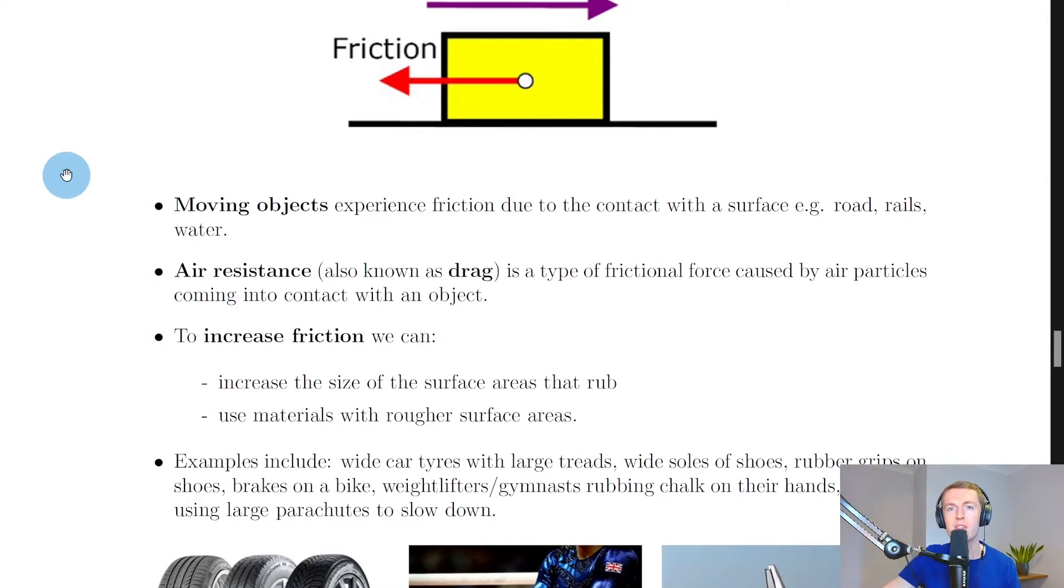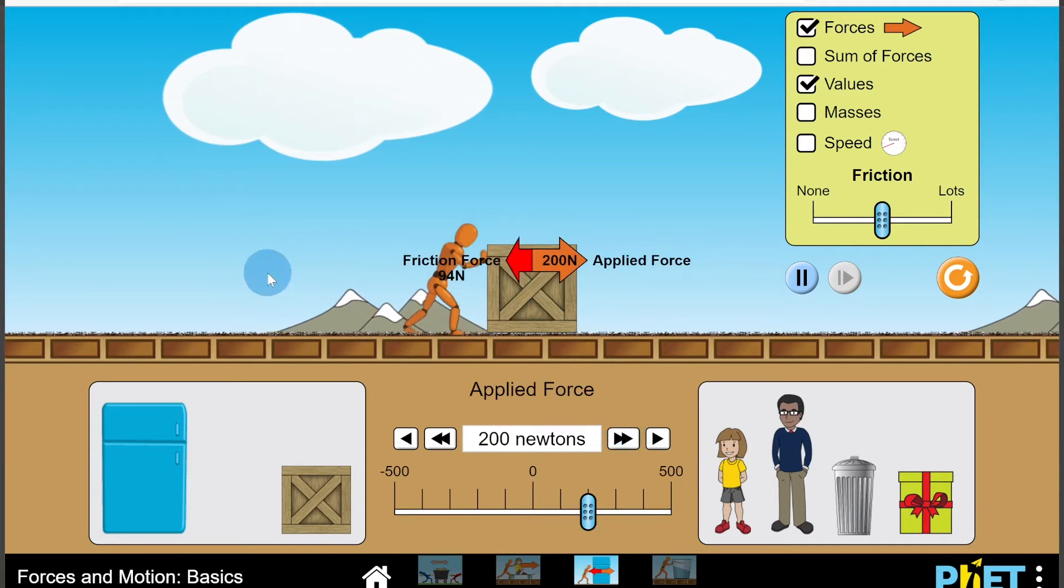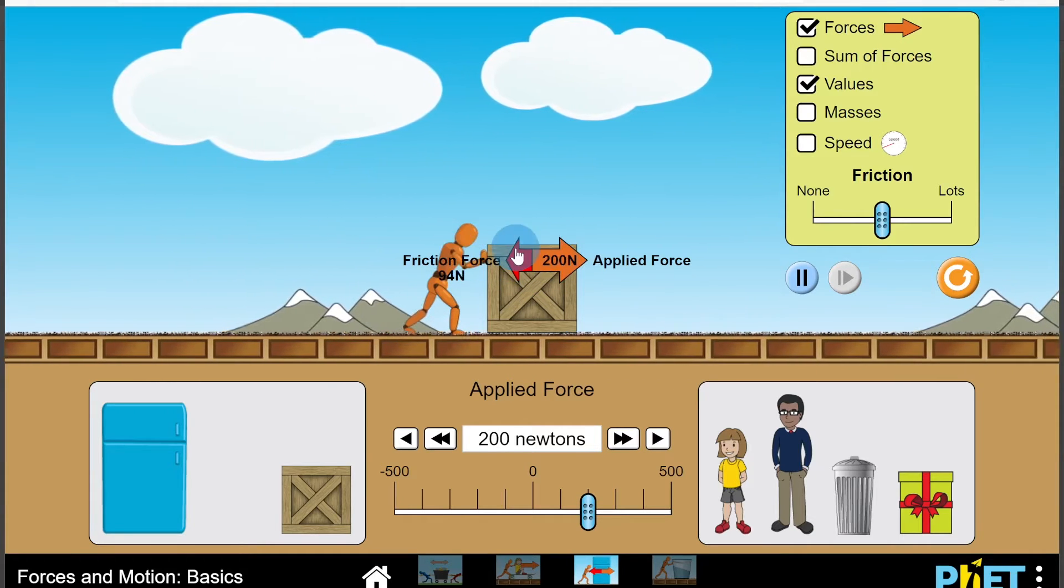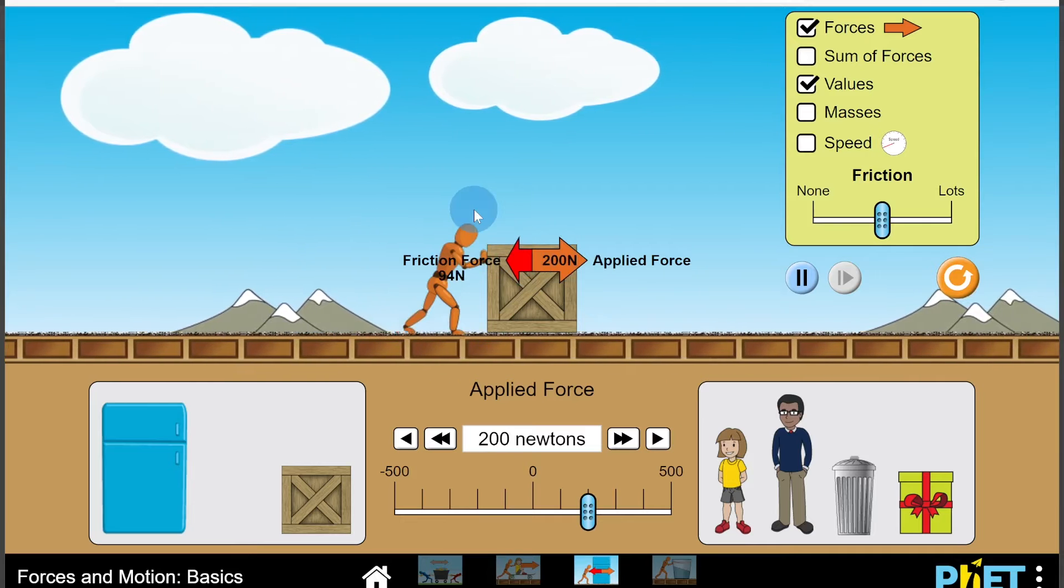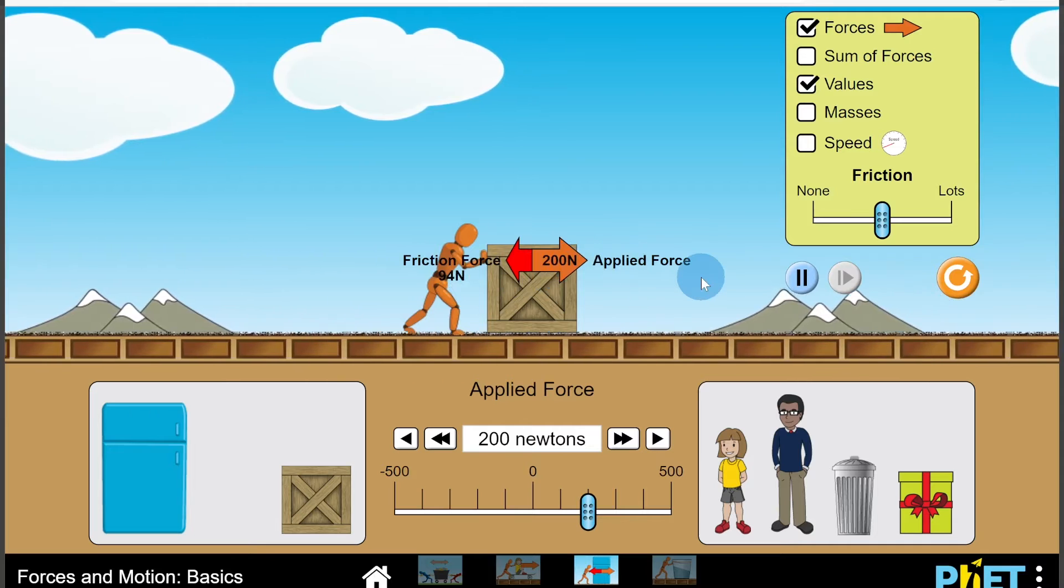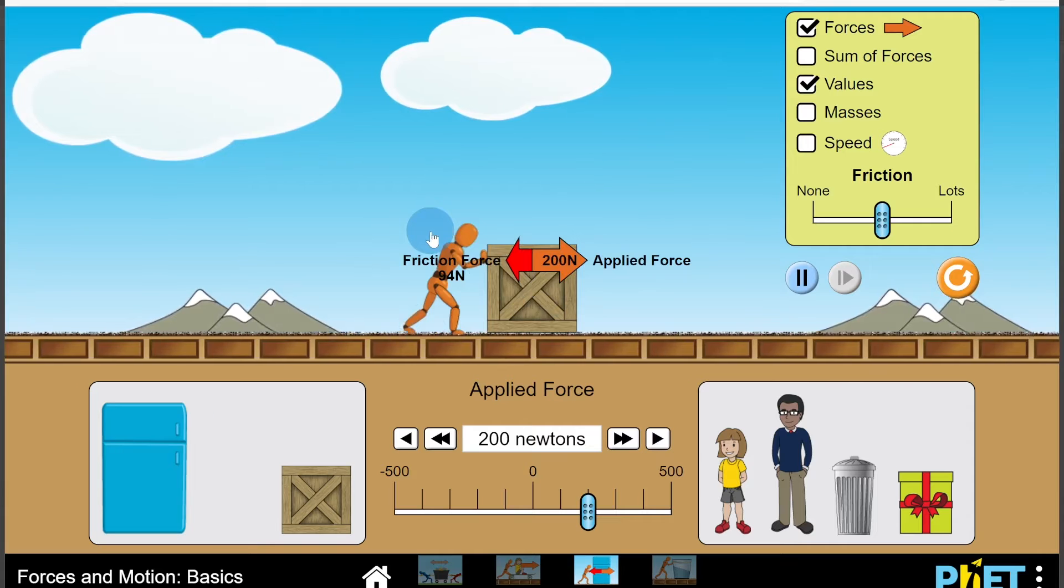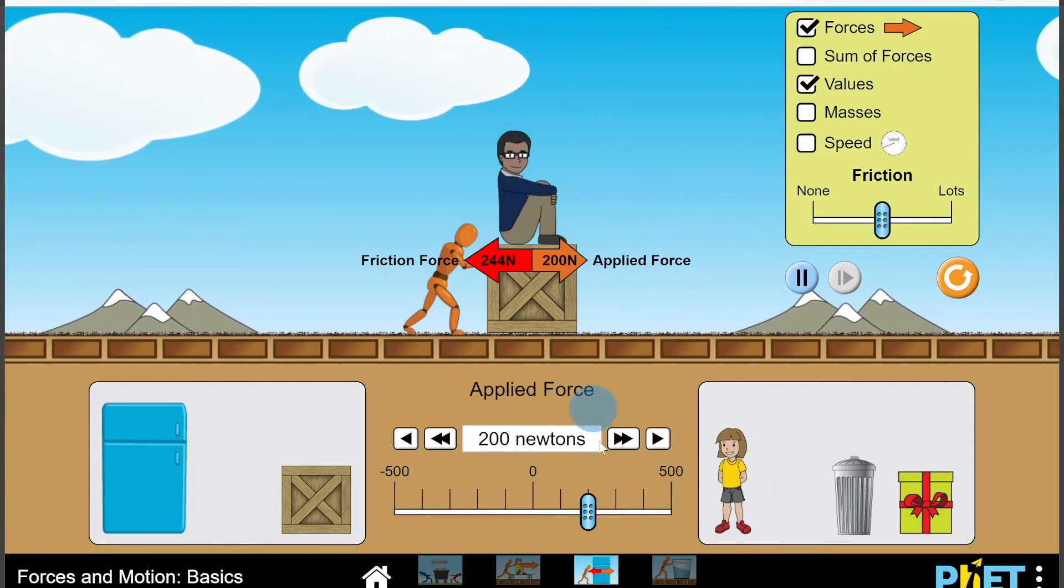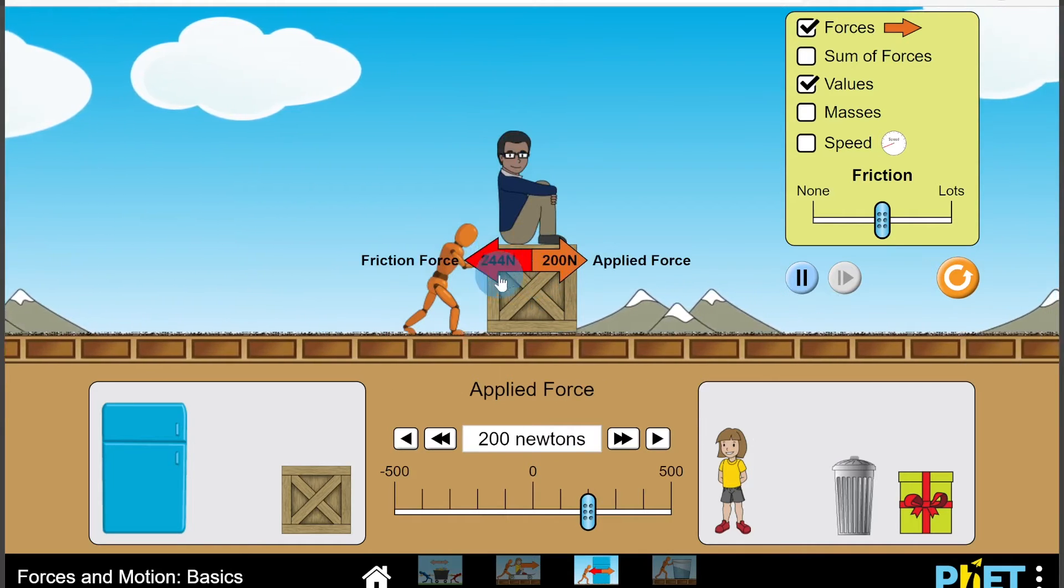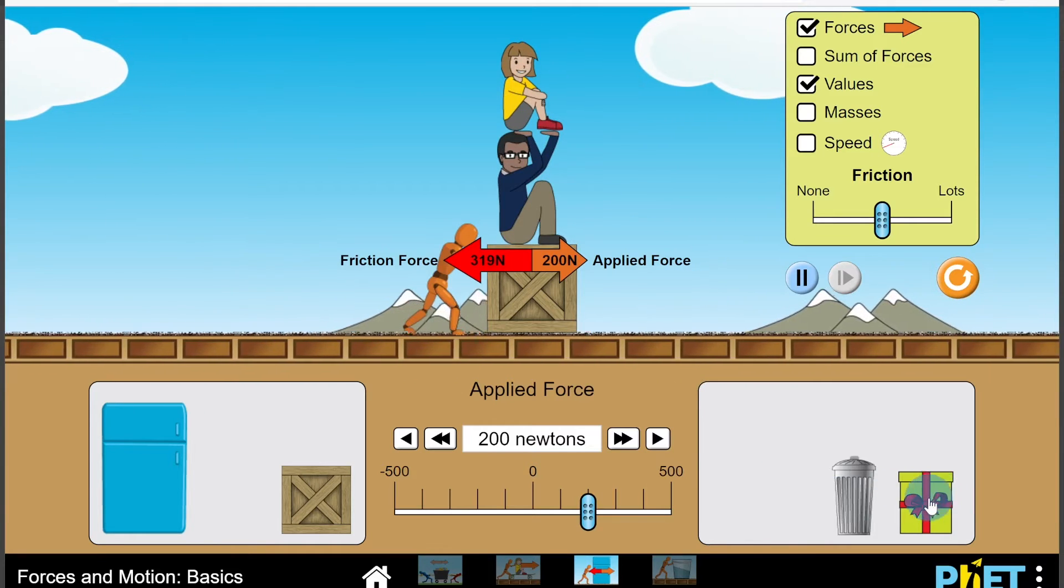Now I'm just going to show you a quick simulation to help you understand friction. So you'll see we have a box here. Let's say the box was moving to the right with a force of 200 Newtons. That means that the frictional force is acting to the left, against the direction of motion. We have 94 Newtons for the friction force and 200 Newtons for the applied force. Now if we were to increase the mass of this object, that should increase the friction force because it's going to be harder to push. You'll now see the friction force is larger than the applied force. So the object is going to slow down, eventually coming to a stop.